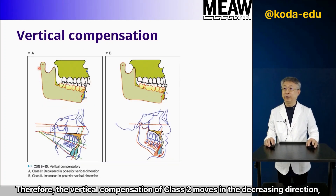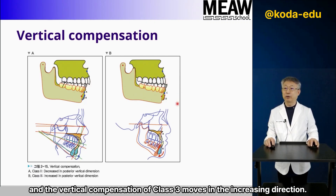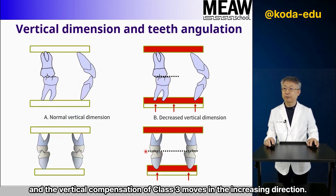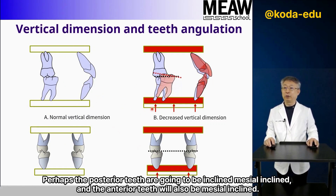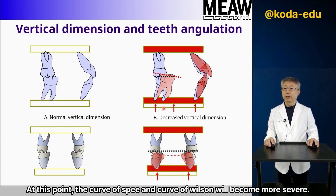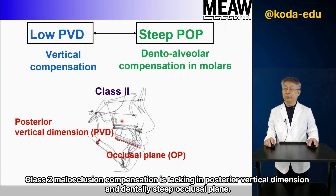Therefore, the vertical compensation of Class 2 moves in the decreasing direction, and the vertical compensation of Class 3 moves in the increasing direction. When growing in the direction of decreasing vertical compensation, the posterior teeth will be mesially inclined and the anterior teeth will also be mesially inclined. The curve of Spee and curve of Wilson will become more severe. Class 2 malocclusion compensation is characterized by lacking posterior vertical dimension and a dentally steep occlusal plane.